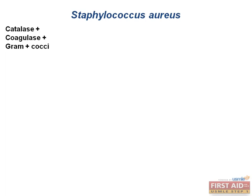Staph aureus can also cause scalded skin syndrome, which is mainly associated with babies and their newly cut umbilical cords with less than sterile scissors. It is caused by exotoxins known as exfoliatin. Exfoliatins are specific towards desmogleans in the epidermis; they break down the epidermal layer and cause blistering of the skin that resembles skin that has been scalded or burned. Remember that exfoliatins are made by the cell and actively secreted into the surroundings.